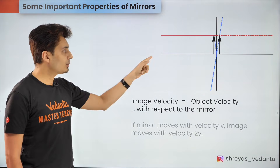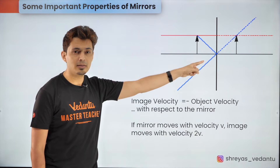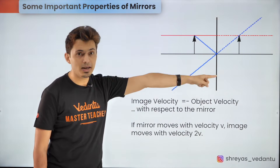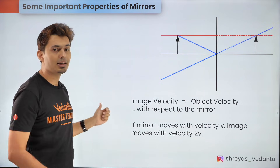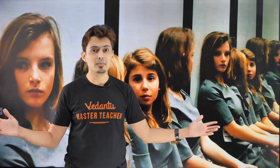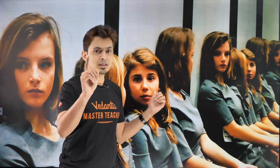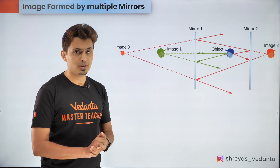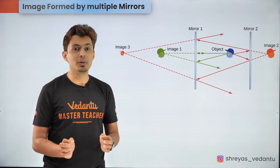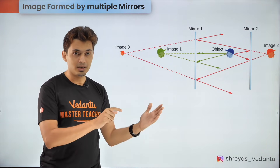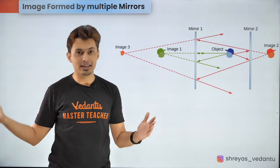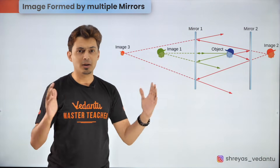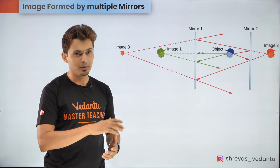If you keep the object at rest and move the mirror itself with velocity V, the image will move with twice the velocity of the mirror. You might have visited a barbershop where you find multiple images of yourself on either side. This happens because the image formed by the reflection from the first mirror becomes the object for the next reflection, and that image becomes the object for the next reflection — that's how you figure out all the images formed by multiple mirrors.